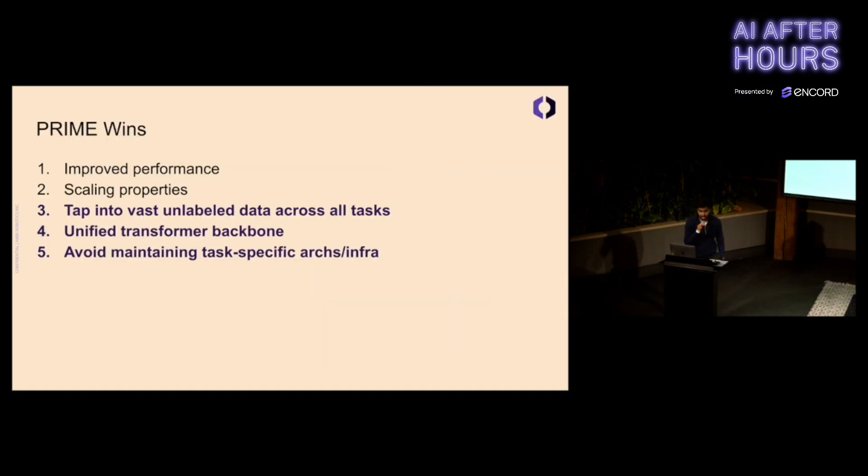To recap, the Prime wins. First, improved performance. Second, scaling properties. Third, we're able to tap into vast unlabeled data across tasks. Fourth, we're able to use a uniform transformer backbone. And fifth, we avoid maintaining task-specific architectures and infrastructure.